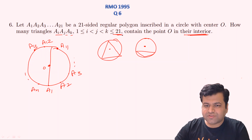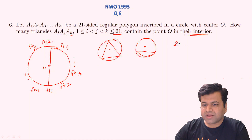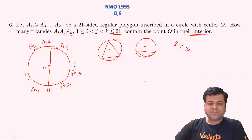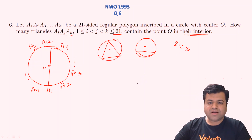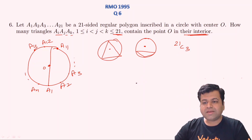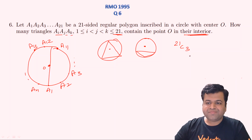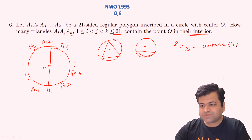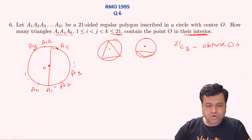One way to solve this is to subtract the number of obtuse-angled triangles from the total number of triangles. Since there are 21 points, the total number of triangles is simply 21C3. We can select any three points from the given 21 points and they will definitely form a triangle.